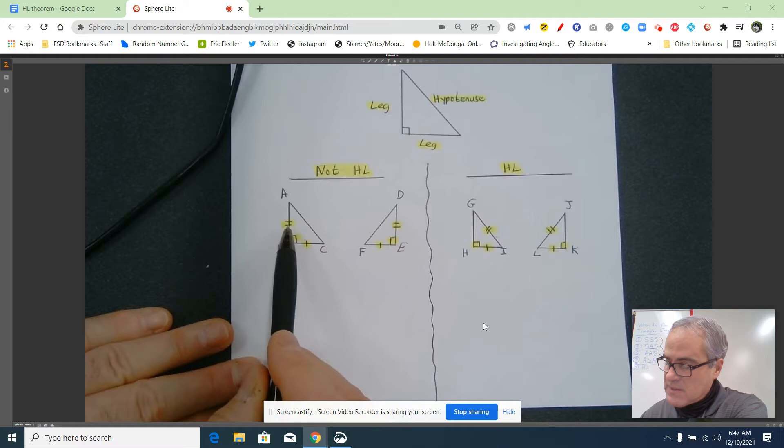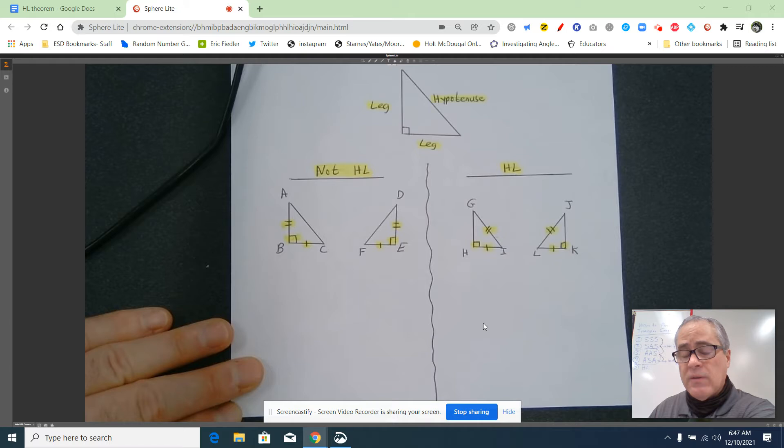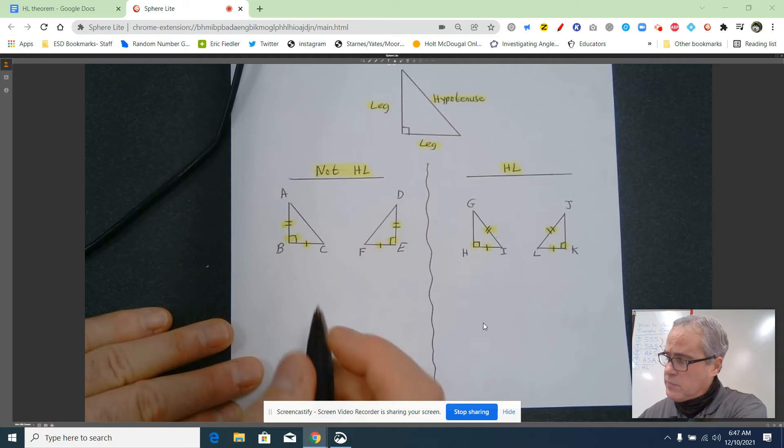The mistake students make is they will say, 'It's a right triangle. If it's hypotenuse-leg, then they are congruent. If it's not hypotenuse-leg, then they're not.' That's not the case. It could be true by one of the other four ways to prove triangles are congruent.